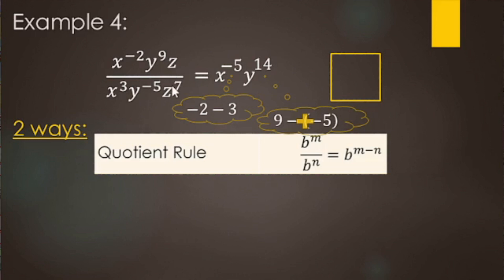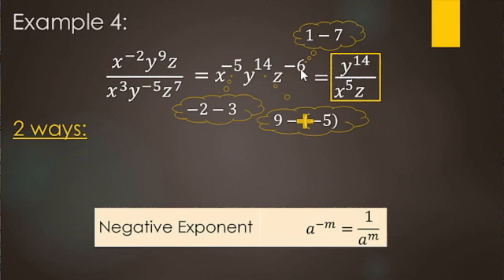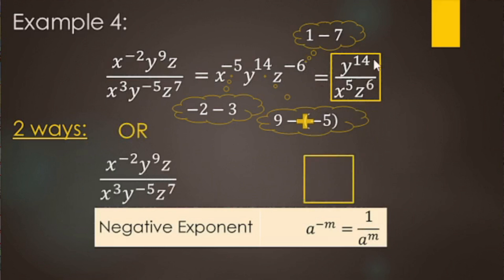Cleaning up with all positive exponents: X has a negative exponent so it goes to the denominator as X to the positive fifth. Y to the fourteenth stays in the numerator. Z to the negative sixth goes to the denominator as Z to the positive sixth. So the answer is Y to the fourteenth over X to the fifth times Z to the sixth.